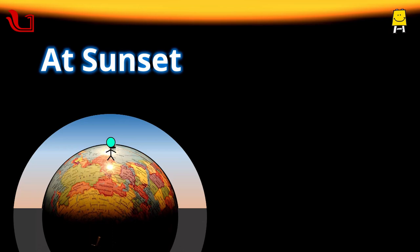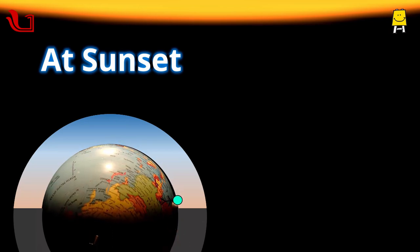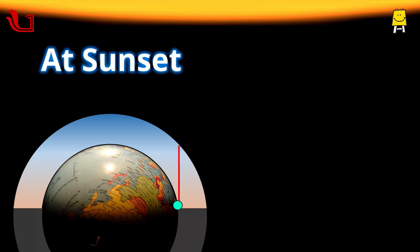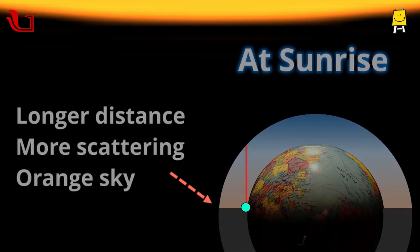In the evening, the sun is at the horizon. So light travels through a longer distance in the atmosphere and hits many more gas molecules. Thus, blue light gets scattered almost completely and orange and red colors reach our eyes. This happens at sunrise too.